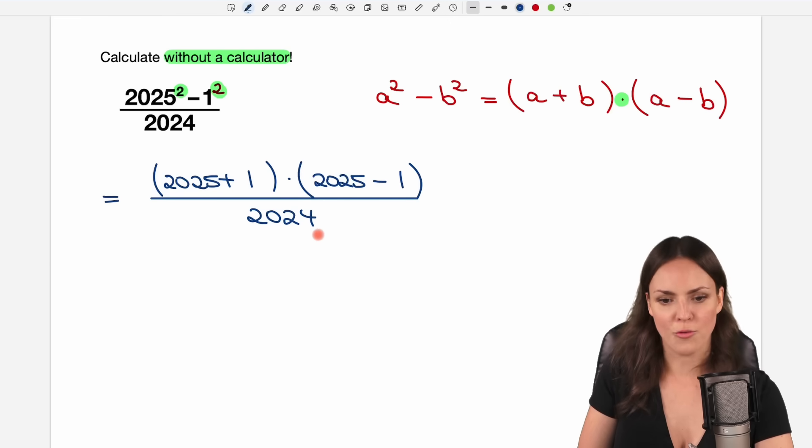We like it so far. Now, the numbers are easier to calculate. We don't want to multiply these two now, but we have a sum in here and a difference in here. And we can just calculate these numbers because 2025 plus 1 just equals 2026.